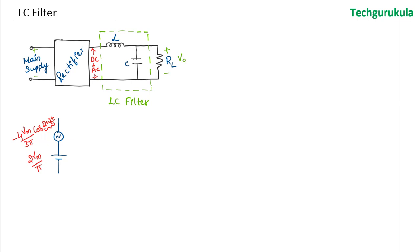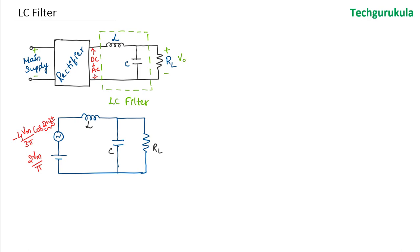Given this output model, we can show the filter circuit: an inductor, a capacitor, and a load resistor, with the output taken across the two output nodes. For reference, let us call these nodes X, Y, and Z.